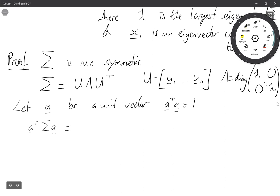Well, this is a transposed UΛU transposed a and if we let b be U transposed a we can write this as b transposed Λ b.